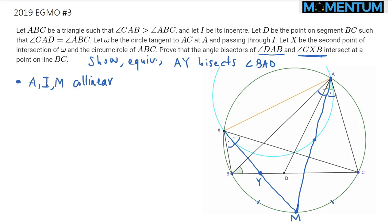Let me first take care of the tangency condition. After playing with this picture a bit, showing that AY bisects angle BAD turns out to be equivalent to showing that quadrilateral AIYB is cyclic.